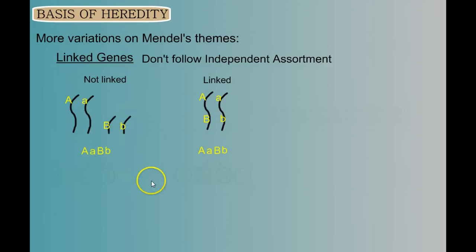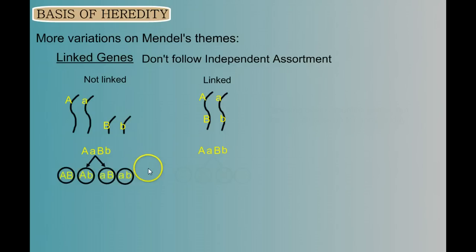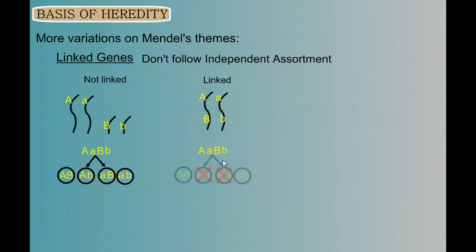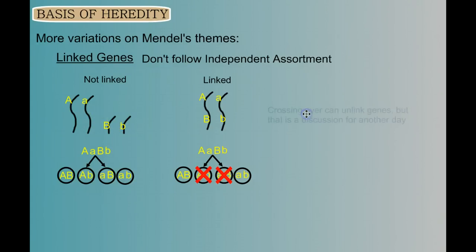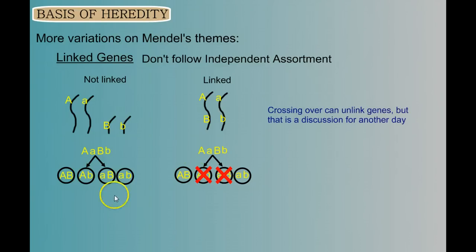When genes are unlinked, we follow the principle of independent assortment and can produce four possible gametes. But when genes are linked, we do not follow independent assortment — if we get the big A, we have to get the big B because we get the whole chromosome, whereas with unlinked genes, big A and big B do not have to go together. We could unlink genes with crossing over, but that's not a discussion for this video.